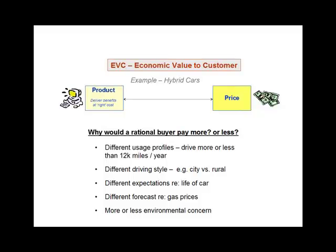Those are relatively hard factors — differences in usage or driving profiles, and differences in expectations and forecasts for the future. In addition, there are some soft factors, most of which can be thought of as tied to environmental concern. For some people, they're willing to pay over and above the pure economic difference because they are concerned about the environment and think buying a hybrid car would do something to aid the problem. They accrue benefits by buying a hybrid that are not strictly economic — they feel better, they think they're doing something good, and to them, that is a significant benefit that they're willing to pay more for.